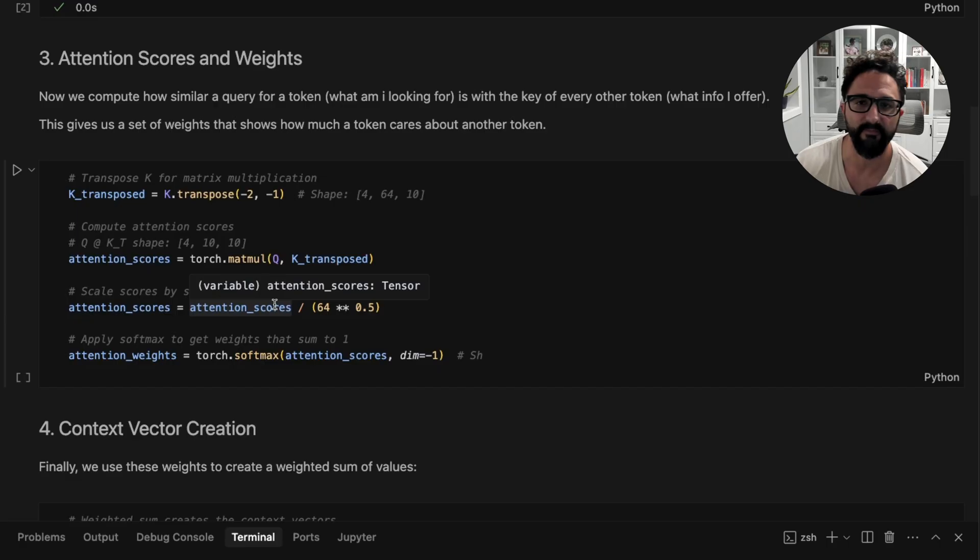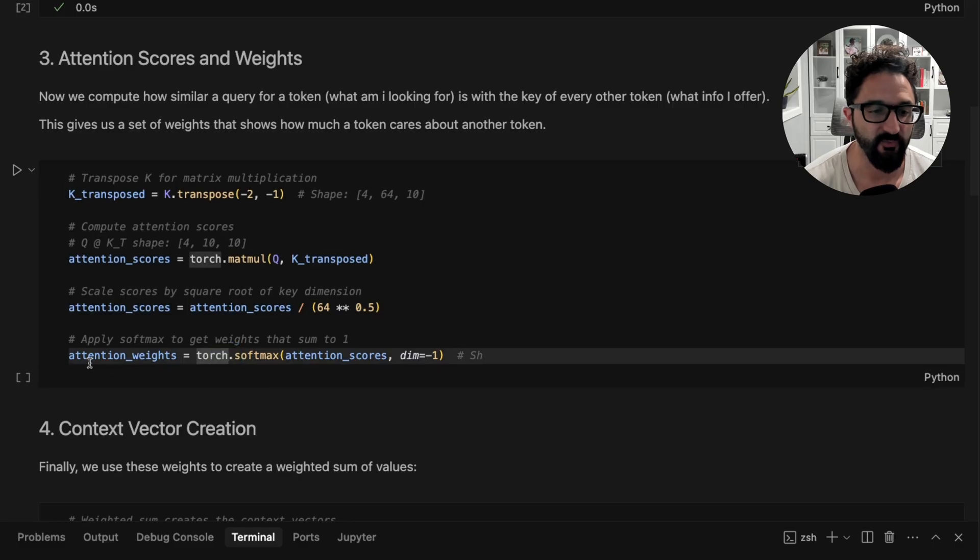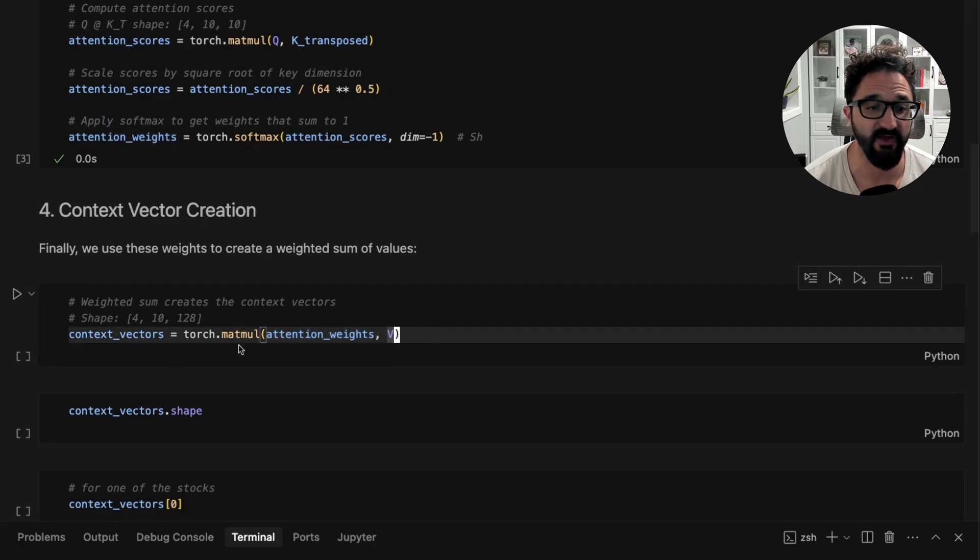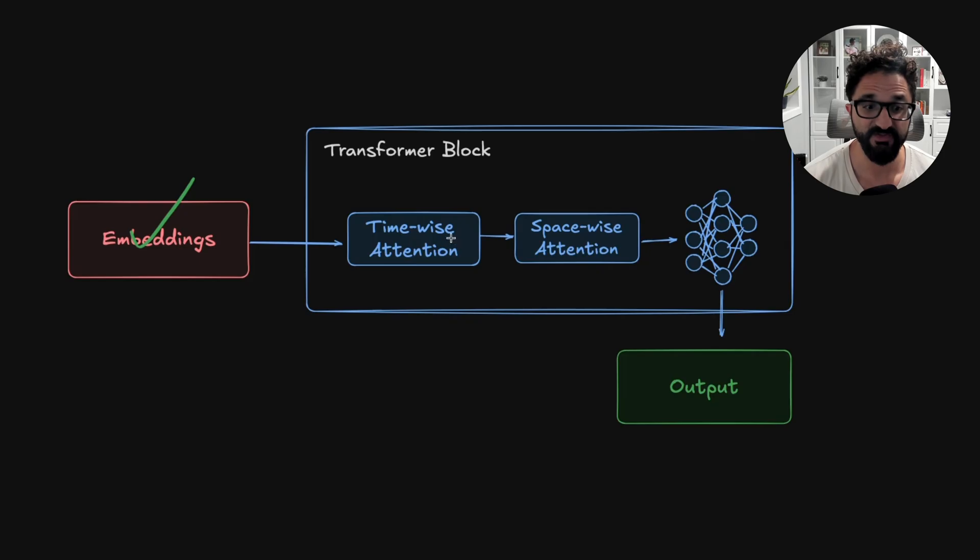This is where we take our query vectors for every token, and then we multiply that by the key vectors for every token. This gives us that similarity score—what information do I provide versus what information am I looking for? We get these attention scores. We normalize that to then produce this set of attention weights. These attention weights are multiplied by the value vectors to give us our context vectors. Our context vectors look very similar to what the embedding vectors do. They just now have been updated with additional meaning. So we just did timewise attention, which should feel very similar to regular self-attention.